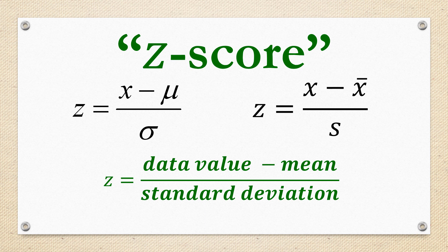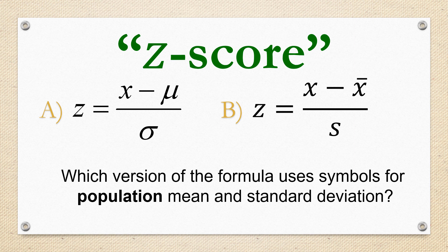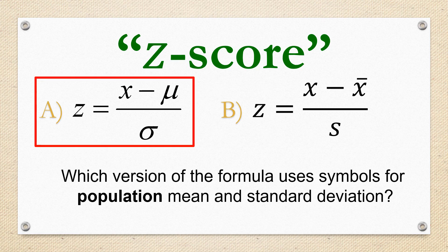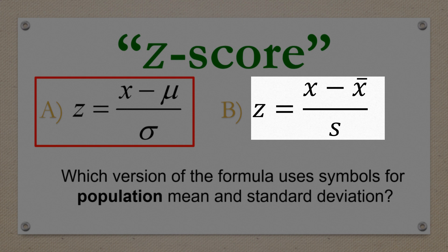Let's see if you remember which one of these formulas represents the population z-score because it includes symbols for the population mean and the population standard deviation. If you said A, you're correct. In a population, we use the Greek letters mu and sigma to represent mean and standard deviation, whereas in a sample, we use x-bar and s.